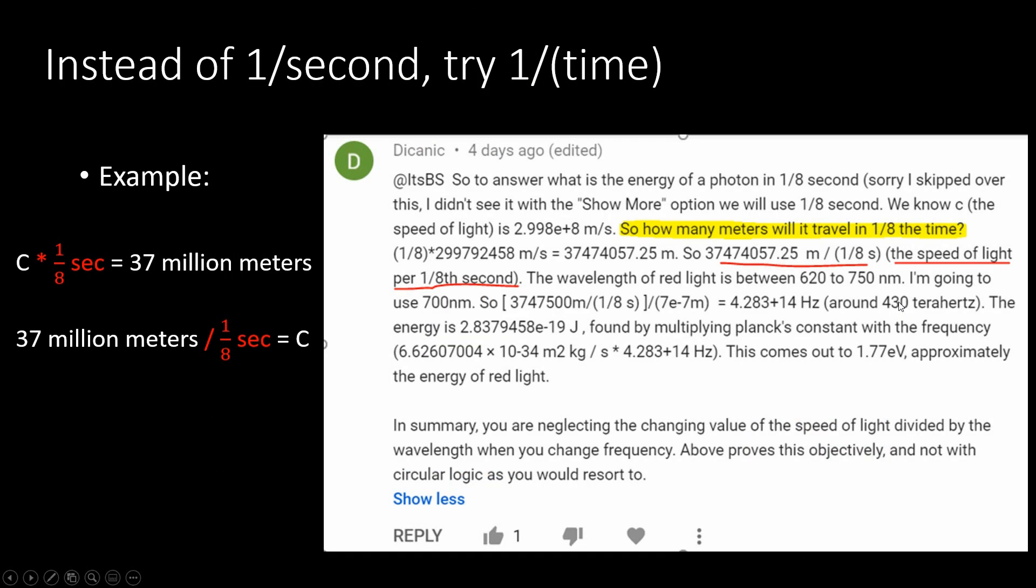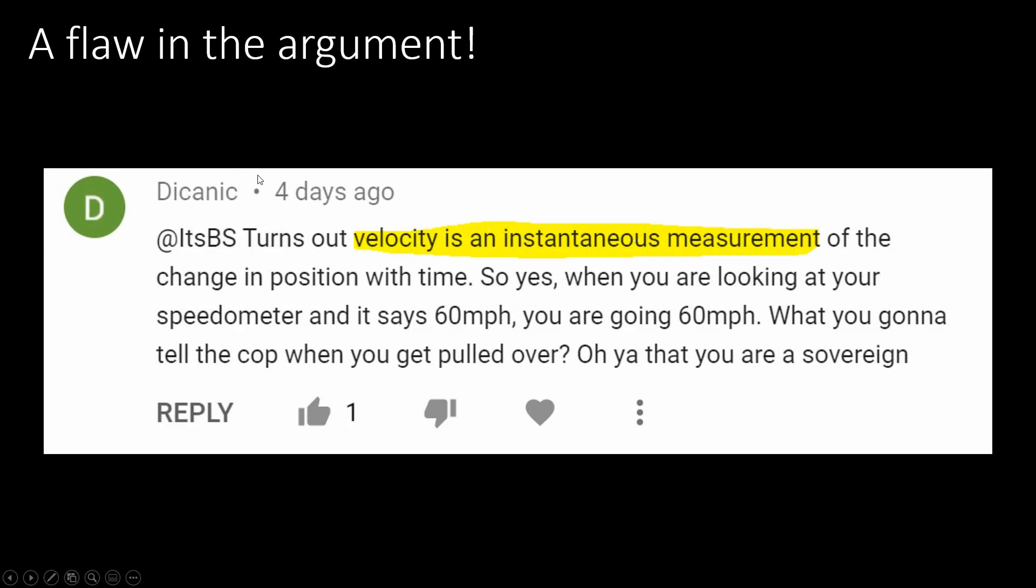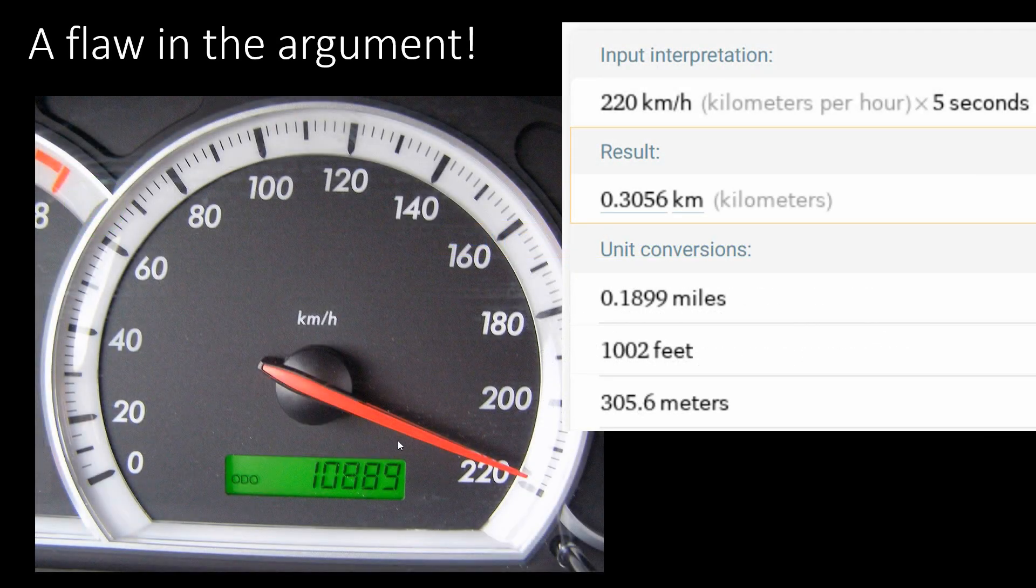Now I couldn't believe the argument would be that easy to refute. So I went back and looked at this line, the speed of light per 1/8th second. And this is the fundamental flaw in this first argument. It's the idea of velocity being an instantaneous measurement, which means if my measurement device says I'm going 220 per hour, then I get to use that value of 220 any way I want.